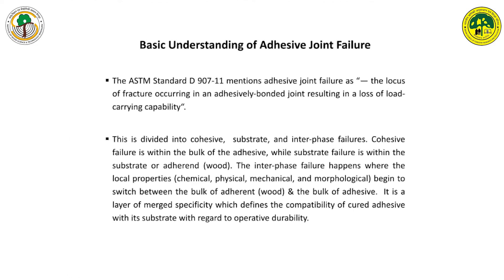An adhesive joint failure, as the ASTM standard D907 mentions, part 11, joint failure is a locus of fracture occurring in an adhesively bonded joint resulting in a loss of load-carrying capacity. Load carrying can be with regard to structural, non-structural, or semi-structural applications. This failure is divided into cohesive, substrate, and interface failures. Cohesive failure is the actual failure of the bulk of the adhesive; substrate failure is the failure of the substrate — wood in this case. Interface failure happens where the properties of both bulks — the bulk of wood and bulk of adhesive — meet, and the interface is actually a zone between both components.